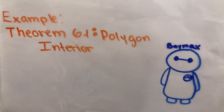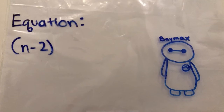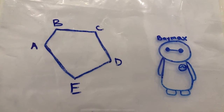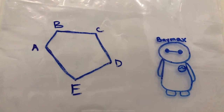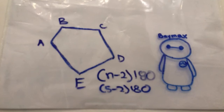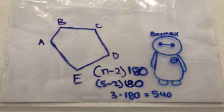The equation to find the sum of the interior angles is (n-2) times 180. In order to find the sum of the interior angles of a pentagon, you plug in 5 replacing n, which is subtracted by 2 for a total of 3, and you multiply it by 180, which gives you a total of 540 as the sum of the interior angles.